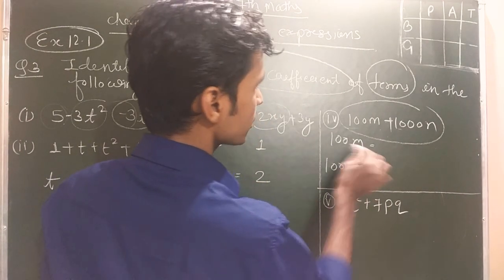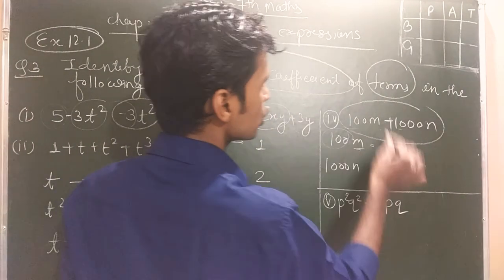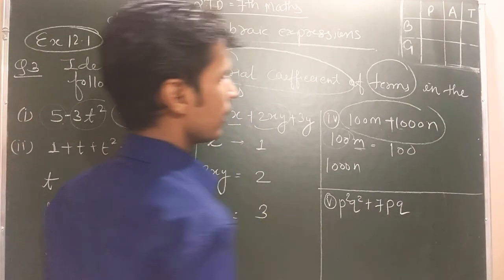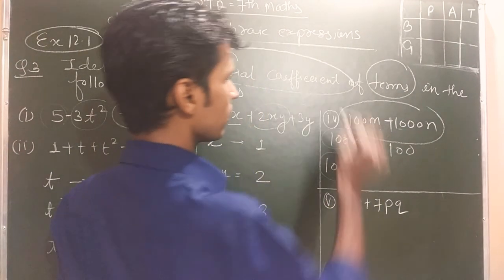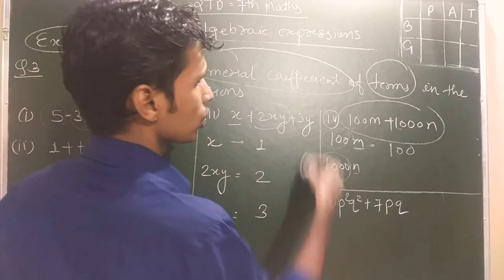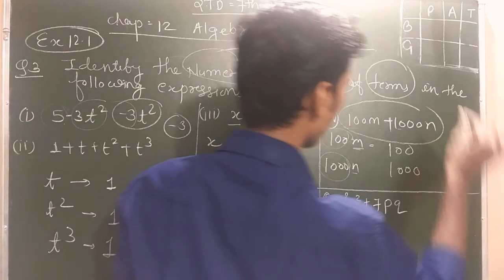Now M is the variable. It's the variable. 100. Now thousand, N is the variable. Thousand.